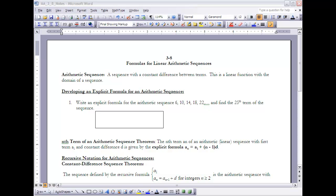So when we say an arithmetic sequence, what we're saying is a sequence with a constant difference between terms. This is a linear function with a domain of a sequence. So anytime you have a starting value and a constant difference between terms, it's going to be linear. Sequences can be linear, it's just that it's going to be a discrete domain as opposed to a continuous domain.